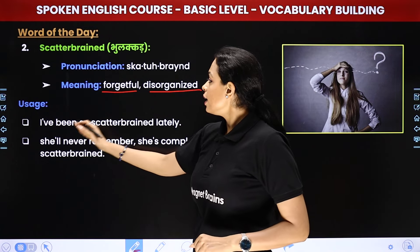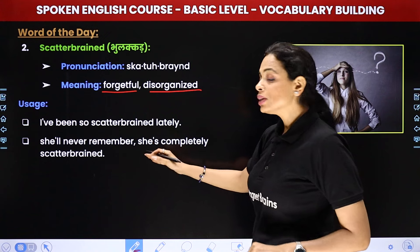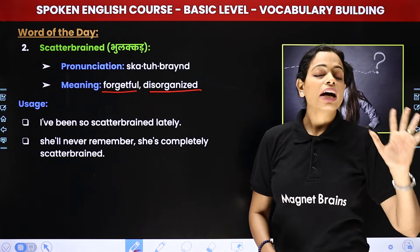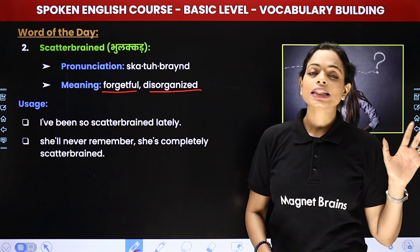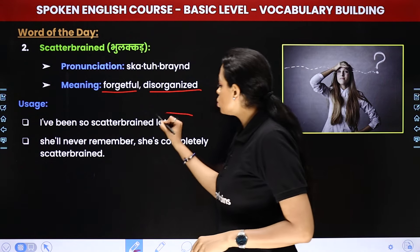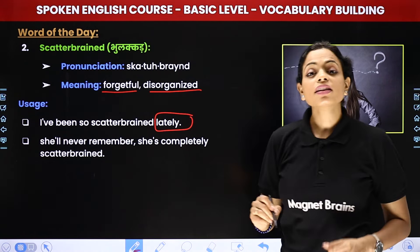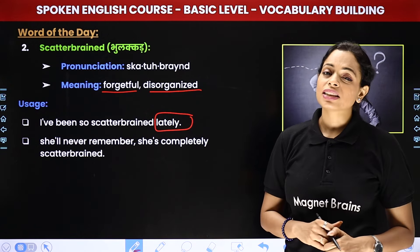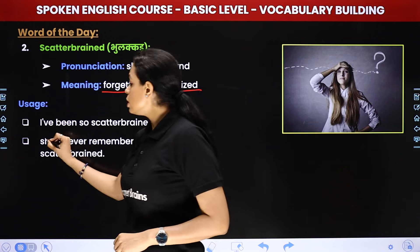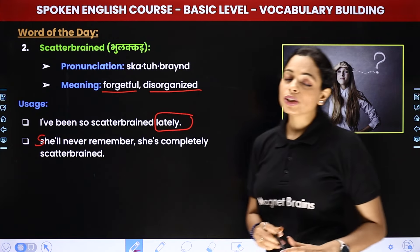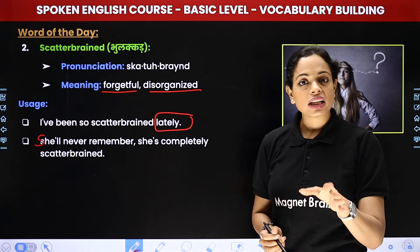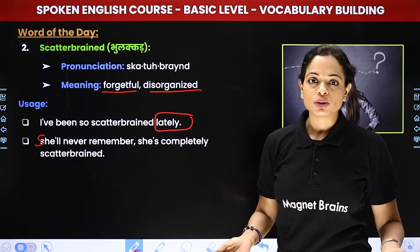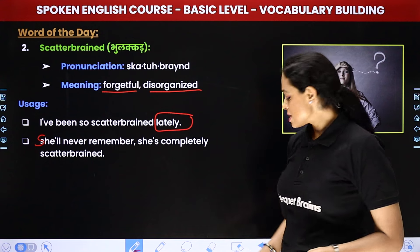Examples dekh lete hai. 'I have been so scatterbrained lately.' Yaar main indino itni bholakkar ho gayi hoon na. Lately ka matlab hota hai indino. 'She will never remember, she is completely scatterbrained' — arey usse kab bhi yaad nahi rahega, wo poori ki poori bholakkar hai. See, it's such a great word — scatterbrained! Ab isko use karo, bada maza aayega.